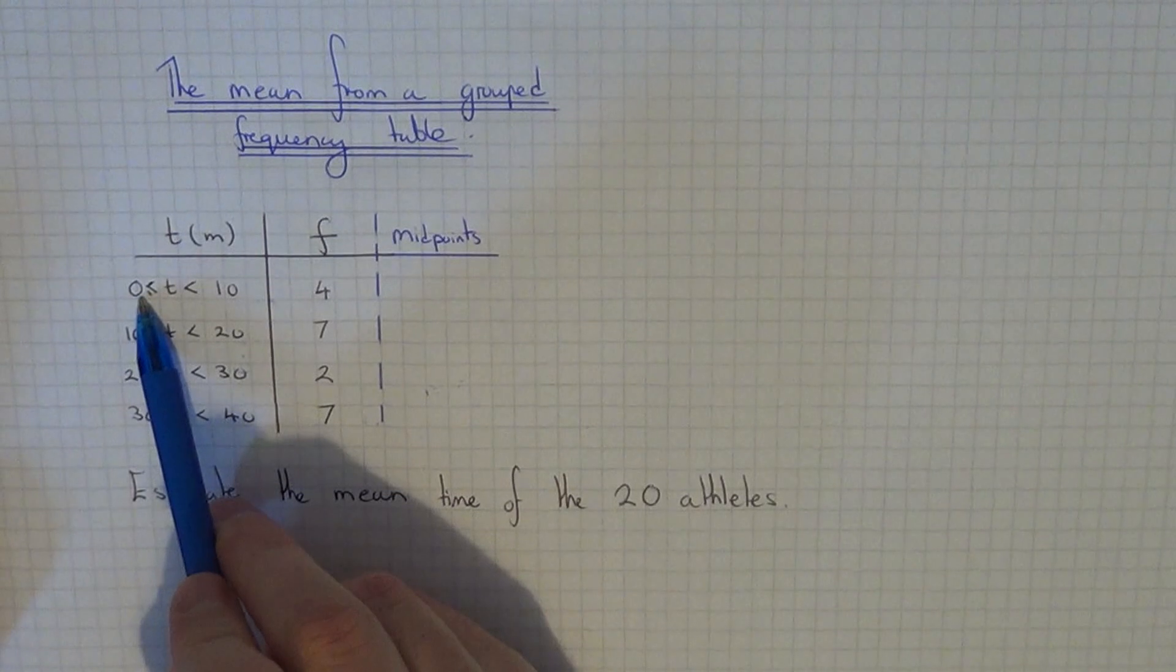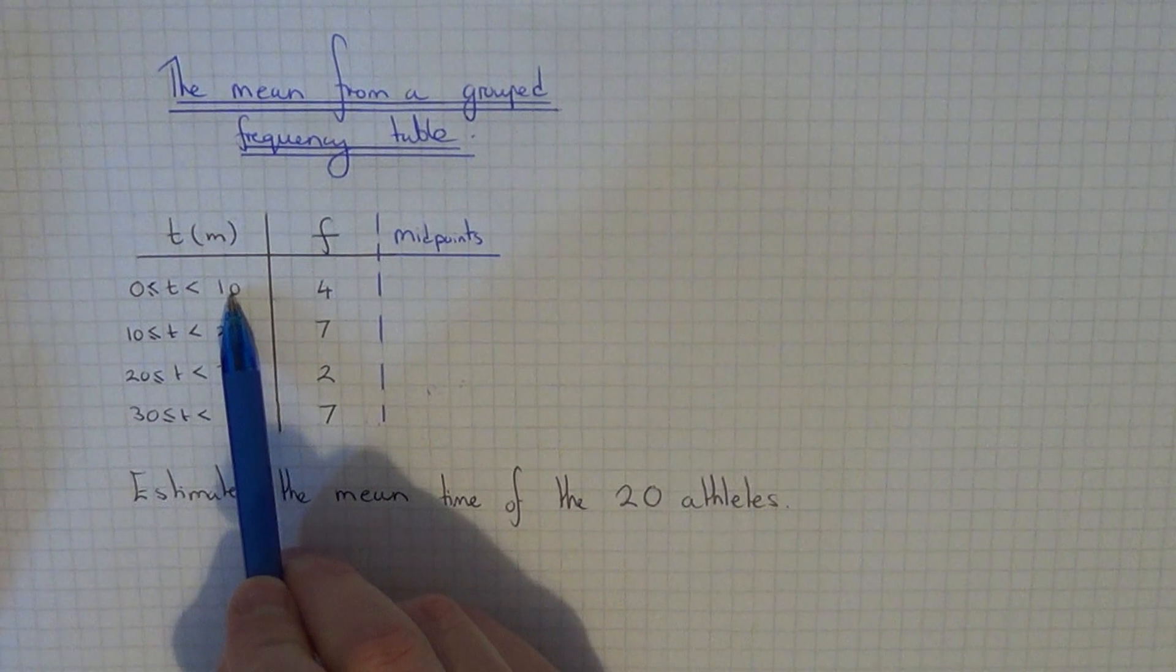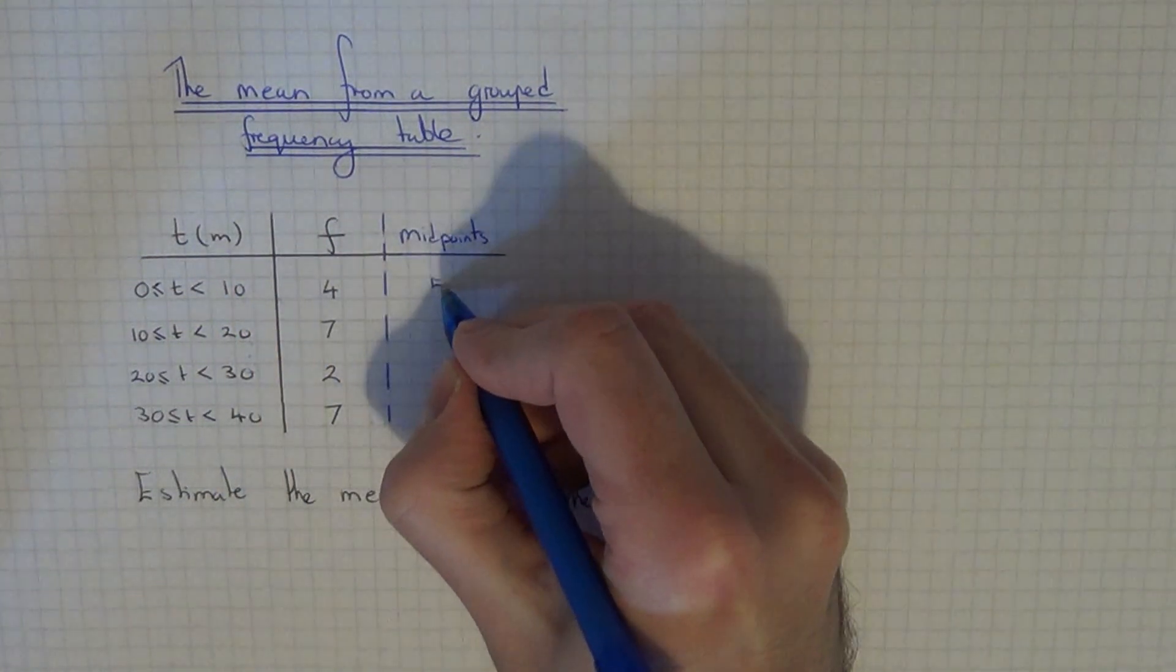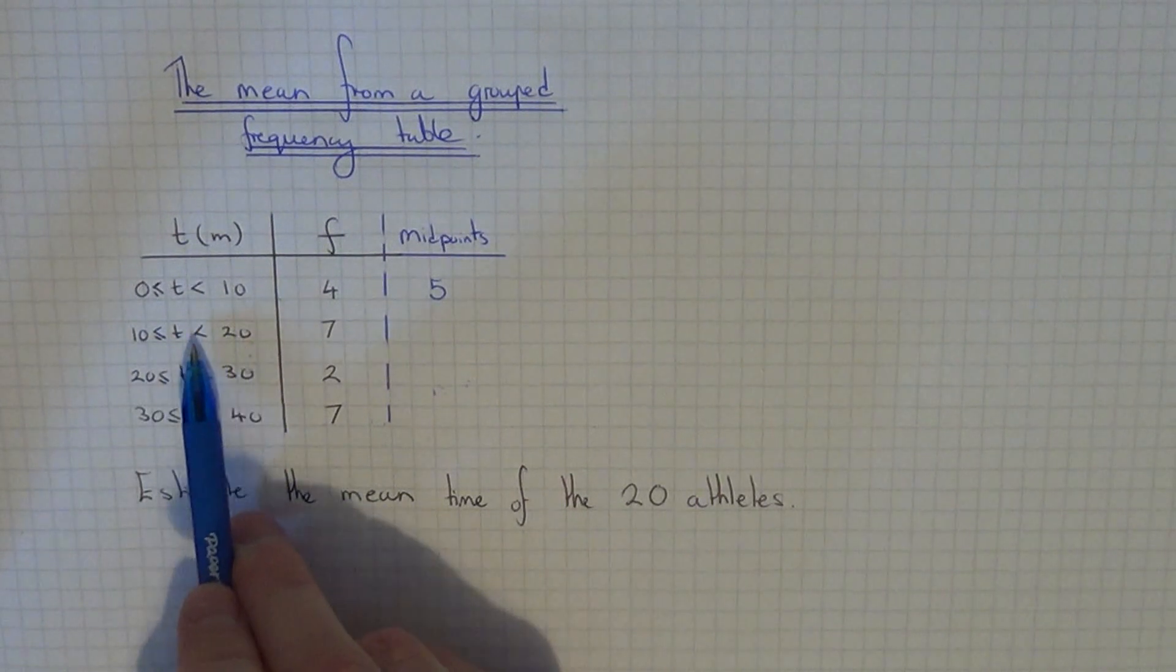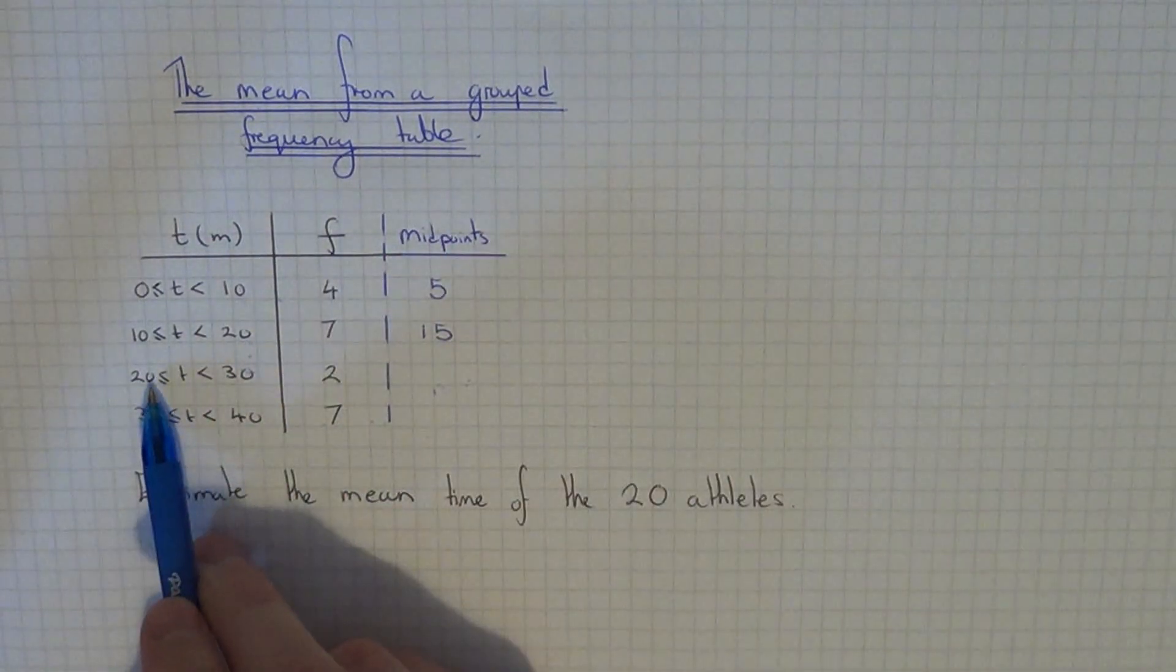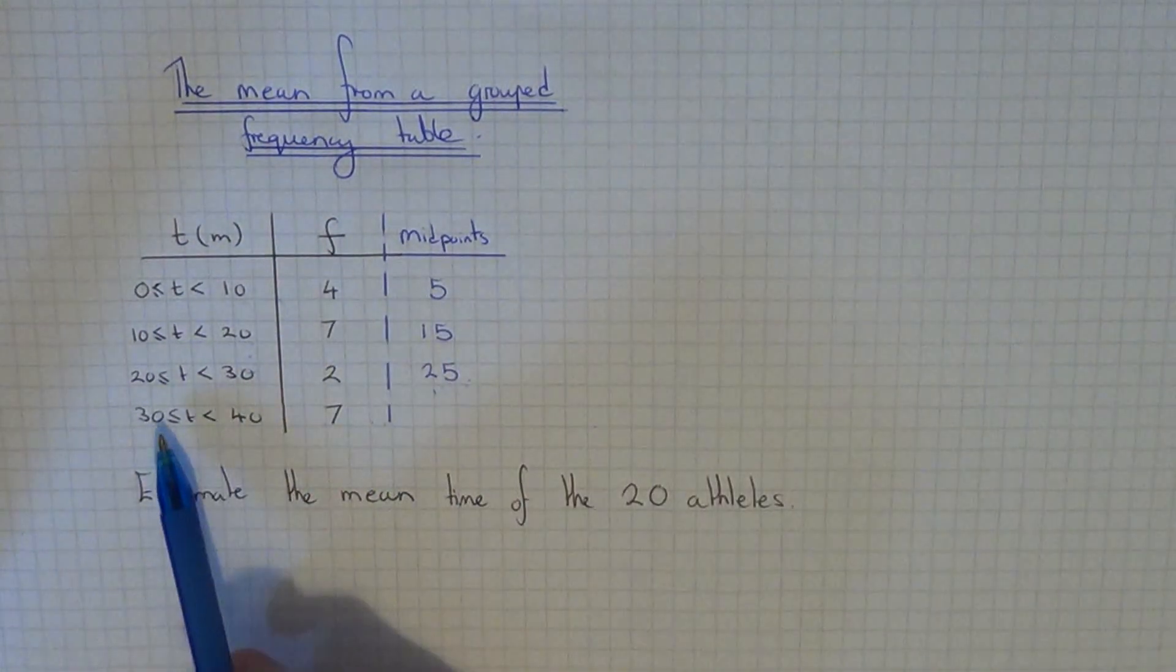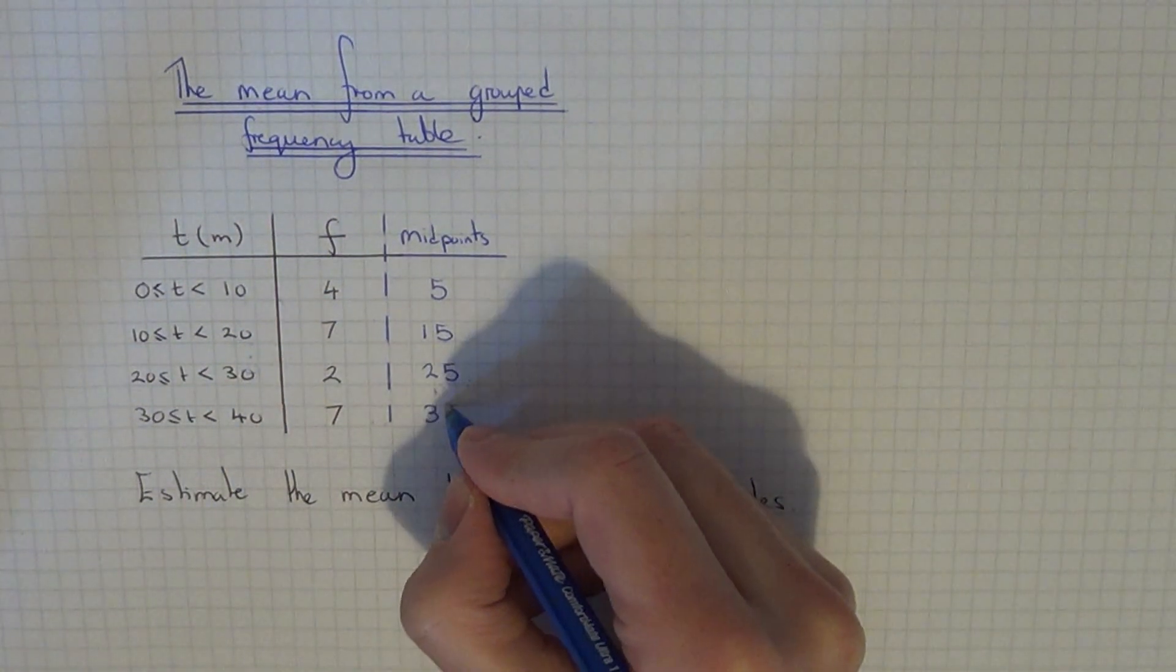The first column was for the athletes who finished between 0 and 10 minutes. The midpoint is the number in the middle of 0 and 10, so this number is 5. The next group was from 10 up to 20, so the midpoint is 15. The next group was from 20 to 30, so the midpoint is 25. And the final one went from 30 to 40, so the midpoint is 35.